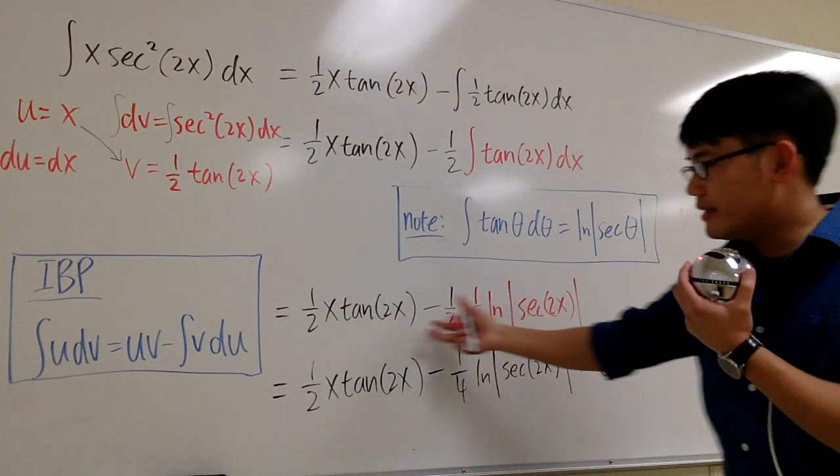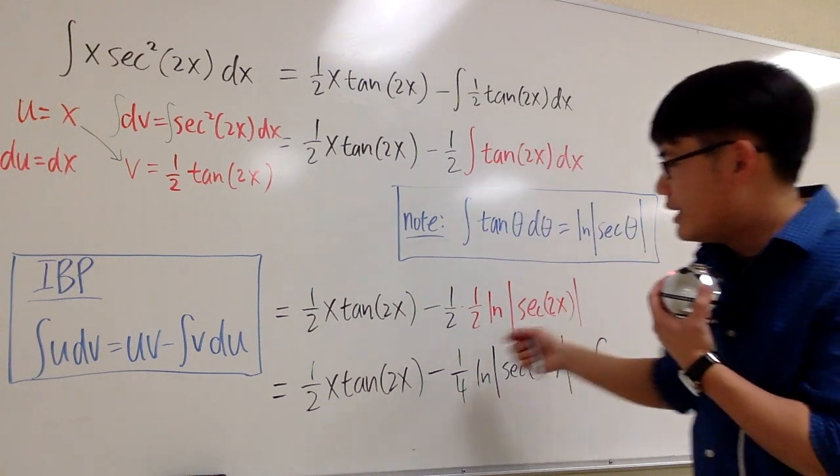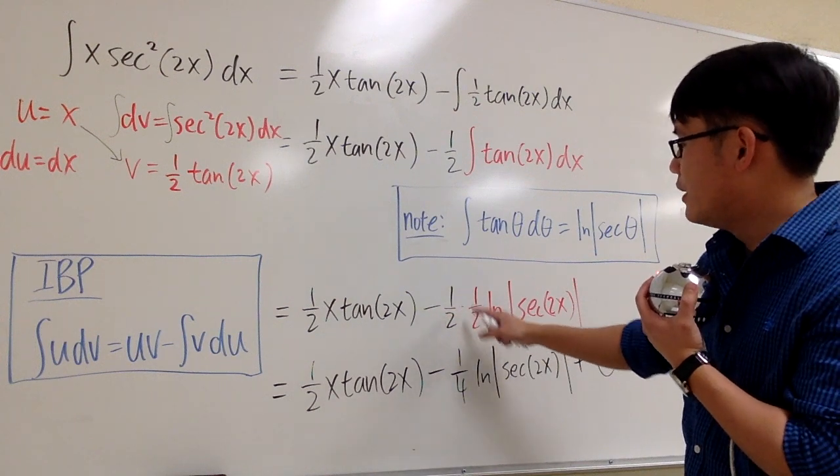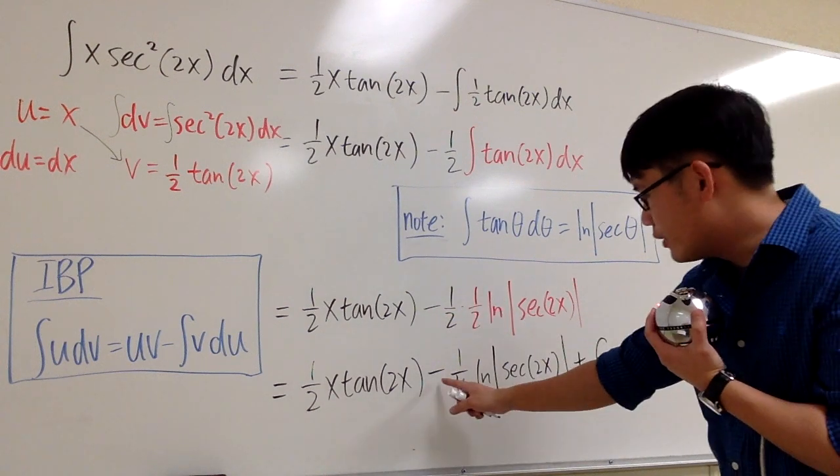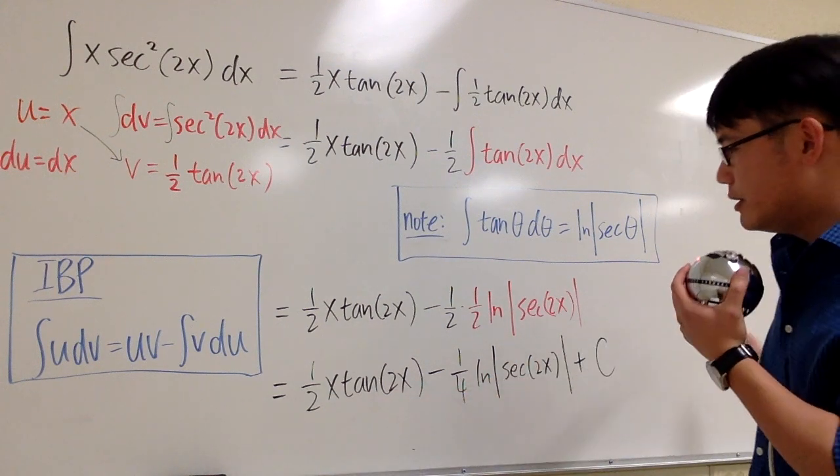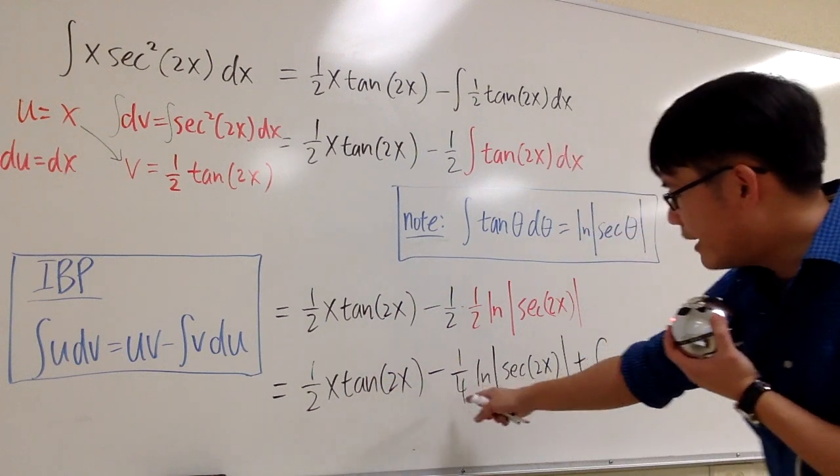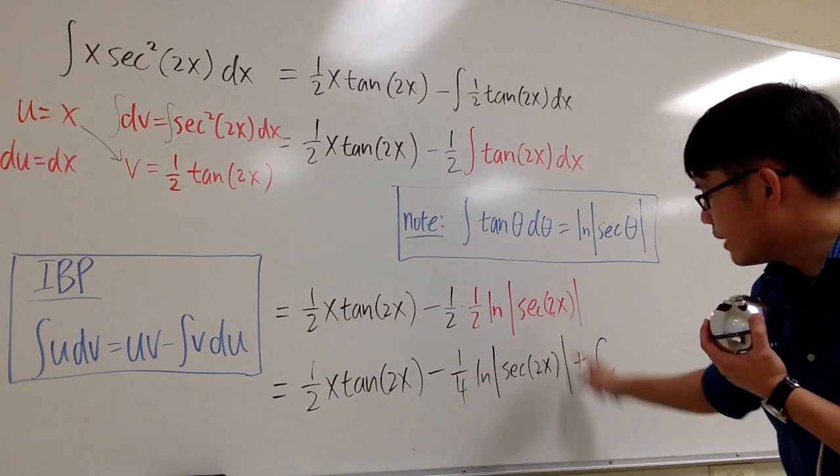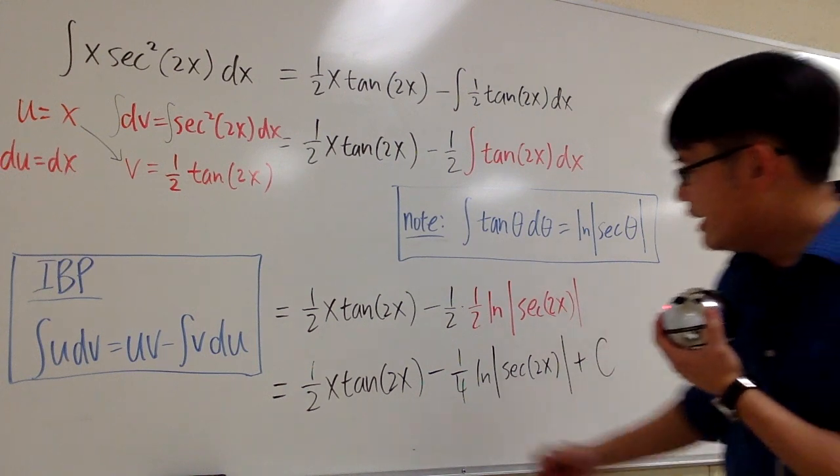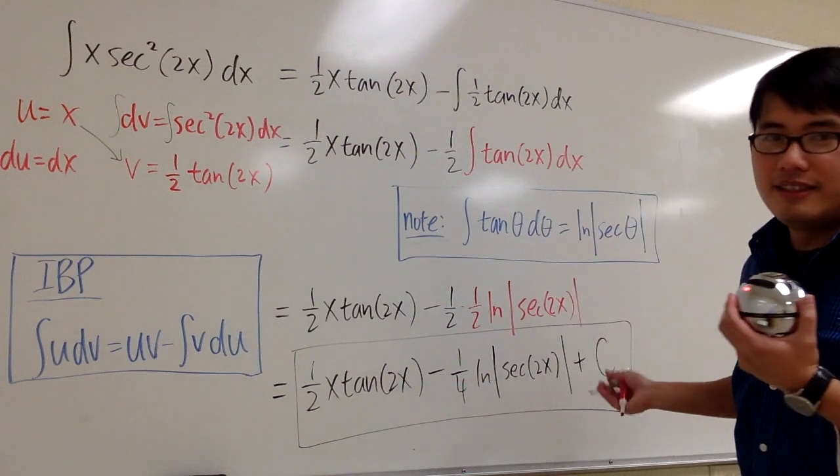And that's it. That's all the integration that we have to do. 1 half x tangent of 2x minus 1 half times 1 half. Of course, this part will give us a total of negative 1 over 4. This right here is the answer. Let me just read it out loud real quick. 1 half x times tangent of 2x minus 1 fourth ln absolute value secant of 2x. And then we are done. So we put a plus C at the end. And this right here is the answer.